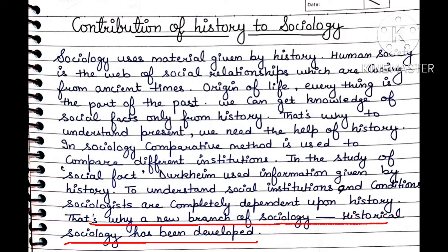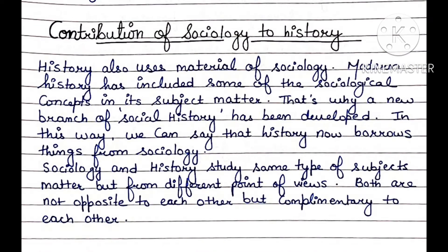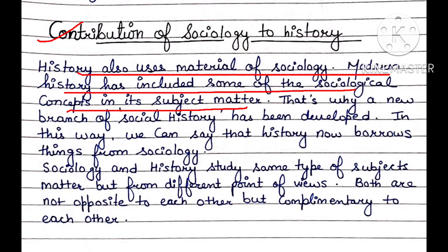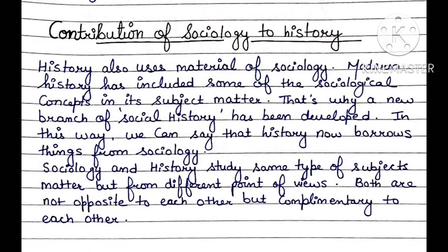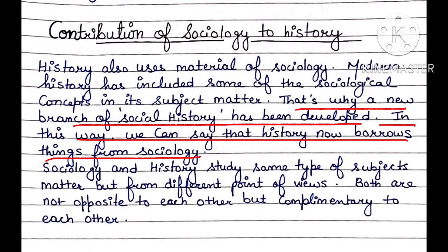We can say that both subjects are very connected, which is why a new subject — historical sociology — has emerged. The next heading is the contribution of sociology to history. It is not only that sociology uses things from history; history also takes a lot of things from sociology to clarify words and theories. Modern history has included some sociological concepts in its subject matter. That is why a new branch called social history has developed, meaning history now borrows things from sociology to explain its theories.